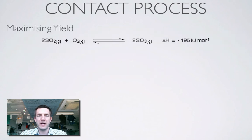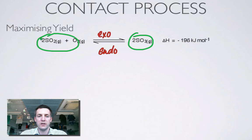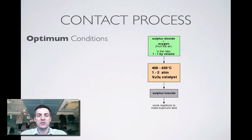So maximizing yield, bearing in mind that the forward process is exothermic and there are fewer moles of gas on the right than on the left, in order to maximize yield we'd want a high pressure. Le Chatelier's principle says that will push this equilibrium to the right because there are fewer moles of gas on the right. And we want a low temperature, because Le Chatelier's principle says that the system will try to raise the temperature by favoring the exothermic reaction, which is the forward process.